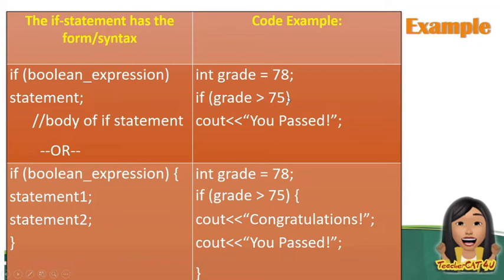Next, we have: int grade is equal to 78. If grade is greater than 75, it will display 'Congratulations' and 'You pass.' As you can see, just because you use an if statement doesn't mean it can only execute one statement — it can contain multiple statements. You can also put operations inside it, for example, calculations — you can perform MDAS functions.